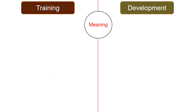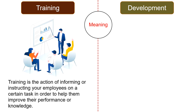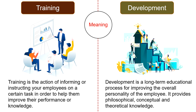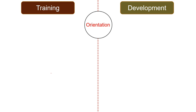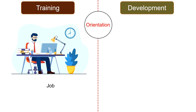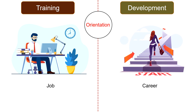Moving on to the differences between training and development. Meaning: training is the action of informing or instructing employees on a certain task in order to help them improve their performance or knowledge. Development, on the other hand, is a long-term educational process for improving the overall personality of the employee — it provides philosophical, conceptual, and theoretical knowledge to employees. Orientation: while training improves knowledge or skills for a particular job or role, development focuses on career building and growth.